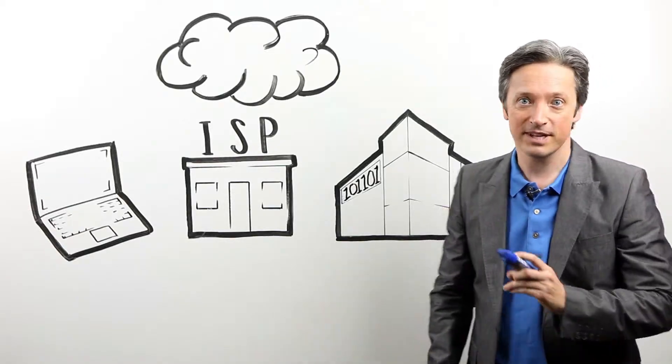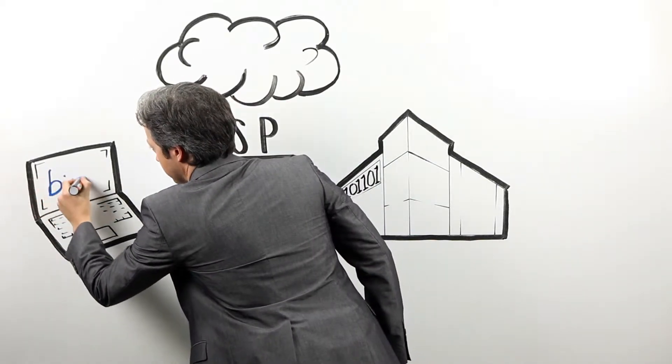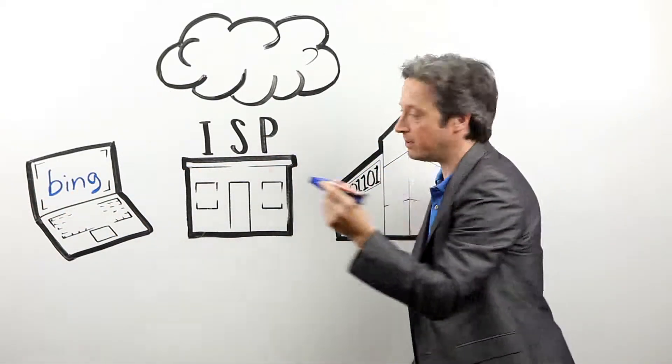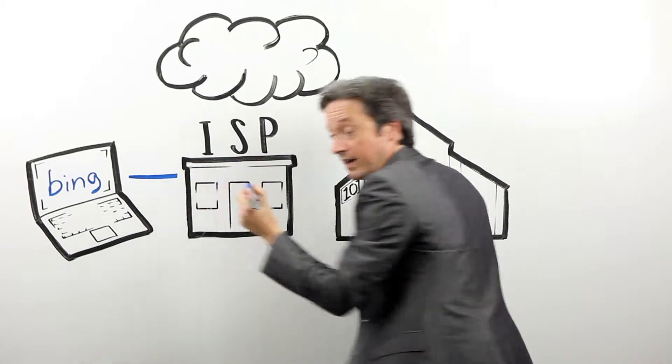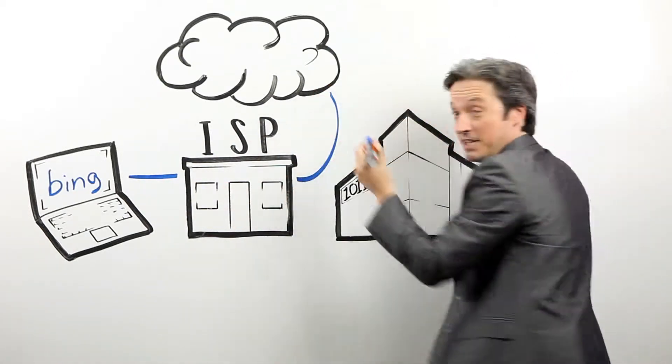For example, say you search Microsoft's Bing from your laptop. Your laptop connects to an internet service provider that MBC connects to the internet.